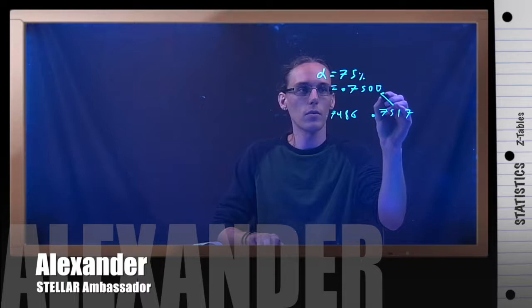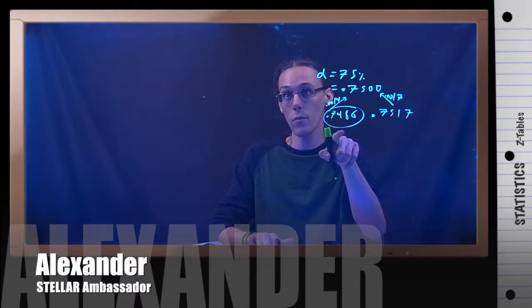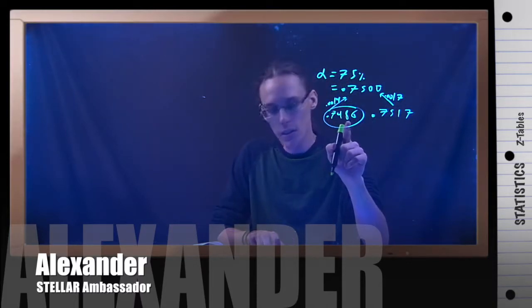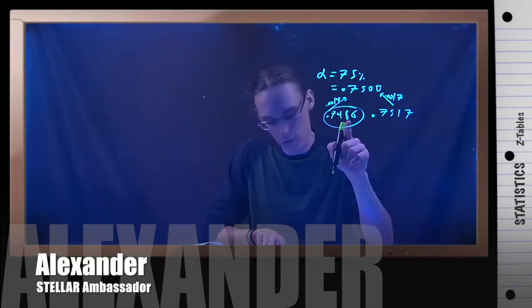Well, notice that the difference between 0.7486 and the value we're looking for is 0.0017. And the difference between 0.7517 and the value we're looking for is 0.0014. So 0.7517 is closer — it's 0.0014 away as opposed to 0.0017 away. So I'm going to use the area 0.7486.